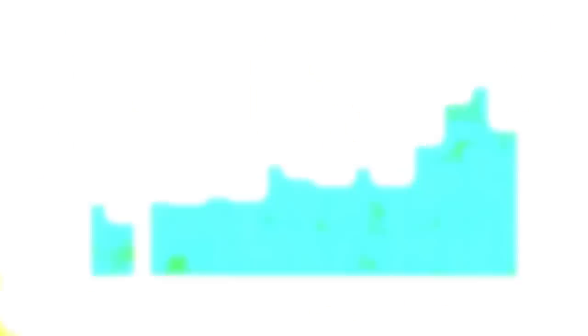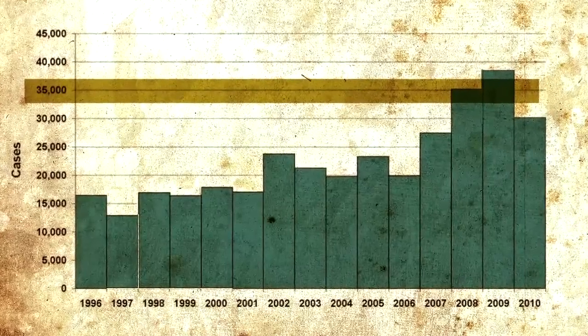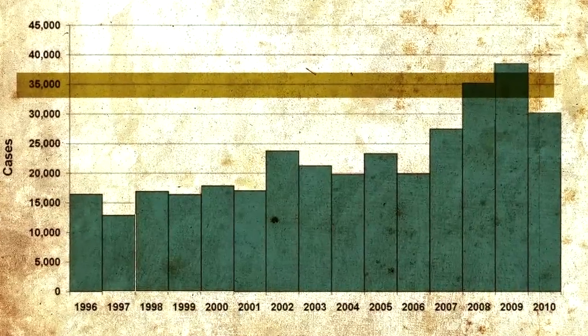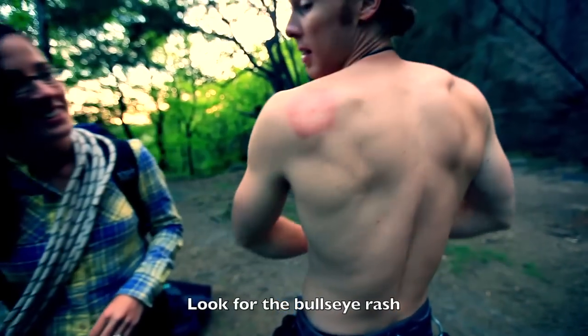Let's put this in perspective. West Nile, which has gotten a lot of press lately, has about 2,000 cases per year, while Lyme disease has up to 35,000 confirmed. It's estimated that only 10 percent of people report that they have Lyme disease, so that means there could be 350,000 people with Lyme disease — a disease that if it goes untreated can cause permanent arthritic conditions and brain damage.